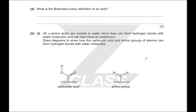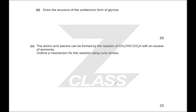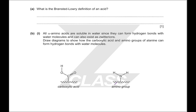All alpha amino acids are soluble in water since they can form hydrogen bonds. To draw how the carboxylic acid and amino groups of alanine form hydrogen bonds with water molecules: you've got polarity — a delta-negative oxygen and a delta-positive hydrogen — and here a delta-negative nitrogen with delta-positive hydrogens. You draw the bonds from hydrogen to oxygen or sometimes from hydrogen to nitrogen.